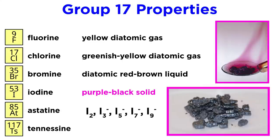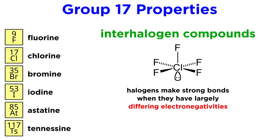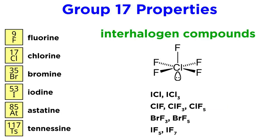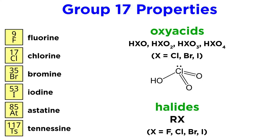This is the only halogen with multiple allotropes, as apart from the diatomic form, I3-, I5-, I7-, and I9- are all possible. Another interesting feature of the halogens is their ability to form interhalogen compounds. Since nonmetals like to make covalent bonds with one another, this applies to the halogens, and works well when the two halogens have very different electronegativities. Here is a list of some common interhalogen compounds. Additionally, chlorine, bromine, and iodine form many different oxy acids, such as the ones listed here, as well as the halides we are familiar with from organic chemistry.